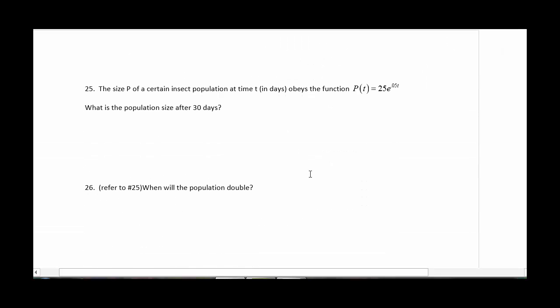Number 25, we're given the growth of a population. We want to know what the population size will be after 30 days. So they already give us this nice pretty formula. We just have to use it. So P of 30 is 25E to the 0.05 times 30. And so we just type that in the calculator. Alright, so I get 112.04.